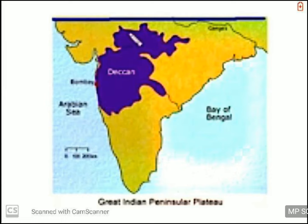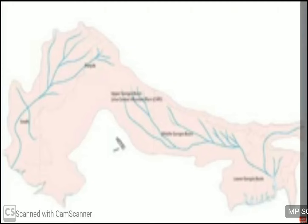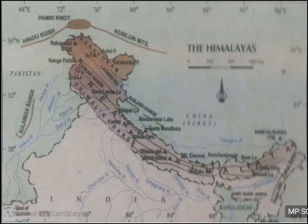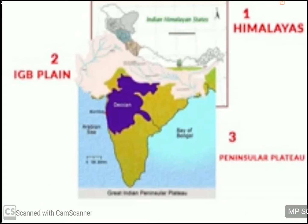Now you know how our Peninsular Plateau was formed, how our Plains were formed, and how our Himalayas were formed. When you put all three together — the Peninsular Plateau in the south, the Plains in the middle, and the Himalaya above — they form our India. This is the history about the geological formation of our country.